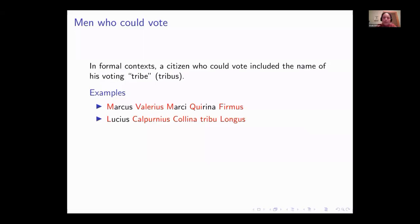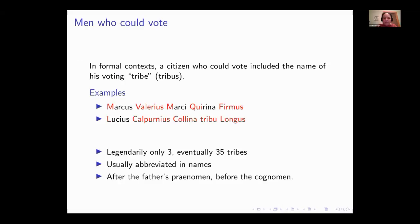A couple of examples: Marcus Valerius, son of Marcus (with the filius left out), of the Quirina tribe, with cognomen Firmus. Similarly, Lucius Calpurnius, of the Colina tribe — 'tribu' meaning 'from the tribe' — with cognomen Longus. If you're a Latin grammar geek, you'll notice that tribes are conventionally feminine. Legendarily there were only three tribes; in practice, eventually there were as many as 35 voting tribes. The tribe name typically gets abbreviated and appears after the father's praenomen in the full formal name, but before your cognomen.